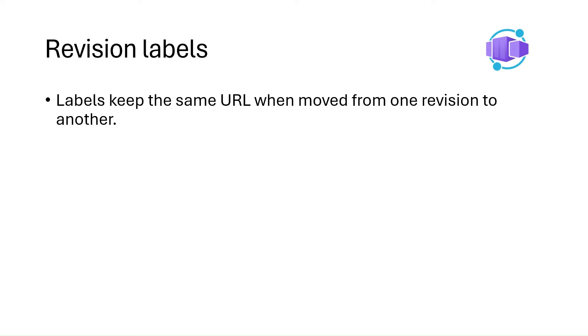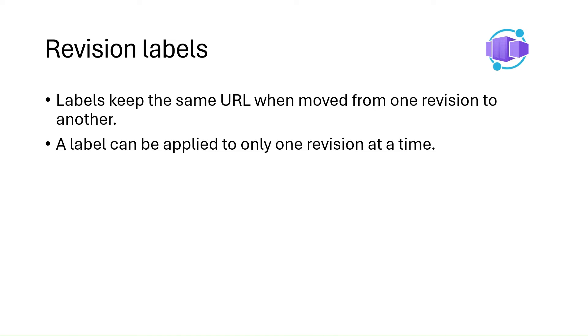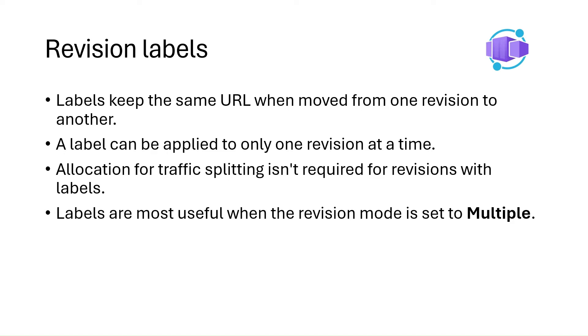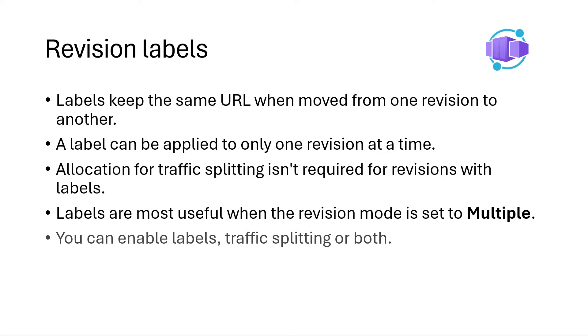For container apps that have external HTTP traffic, labels are a means to direct traffic to specific revisions. A label provides a unique URL that you can use to route traffic to the revision the label is assigned to. To switch traffic between revisions, you can move the label from one revision to another — labels keep the same URL when moved. A label can only be applied to one revision at a time. Traffic allocation for splitting isn't required for revisions with labels, and they are most useful when revision mode is set to multiple. You can enable labels, traffic splitting, or both.